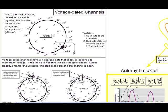The first person to describe this chose to talk about the inside of the cell rather than the outside. So we speak of the inside of the cell being negative relative to the outside, and it's usually around minus 70 millivolts.